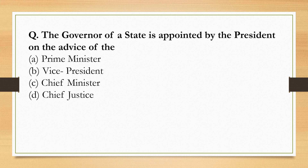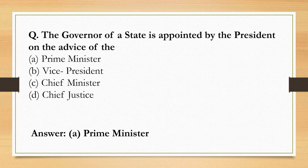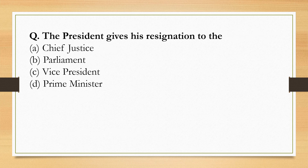A Governor of a State is appointed by the President on the advice of the Prime Minister — Option A. The President gives his resignation to the Vice President of India — Option C.